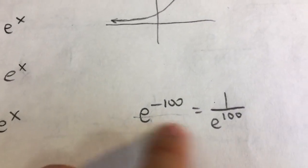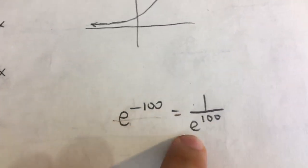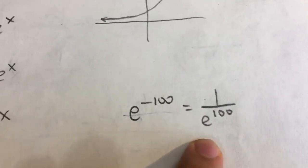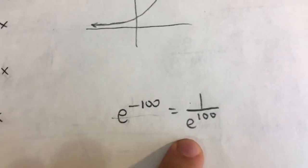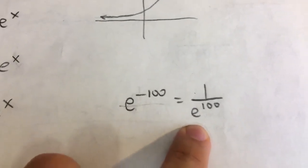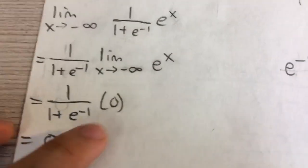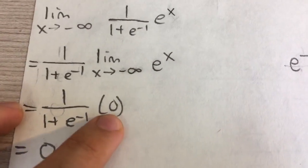Because say it was negative 100. It would be e to the negative 100 would be 1 over e to the positive 100, and e to the positive 100 is huge. It's a huge number. So 1 over that is a very small number. And so the limit approaches 0.